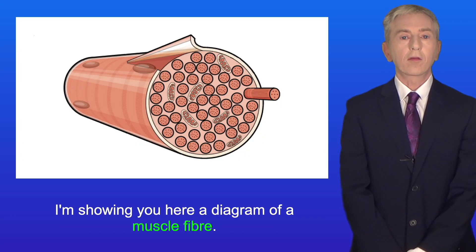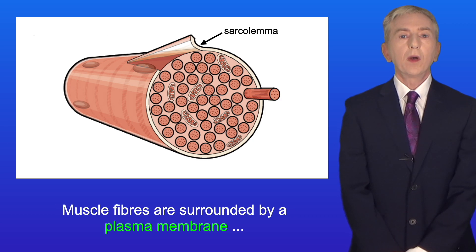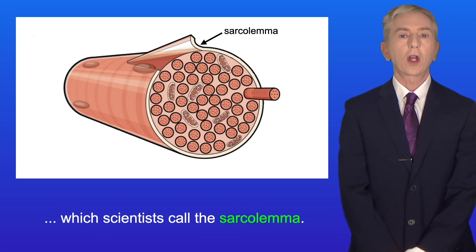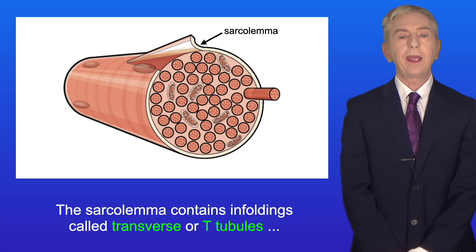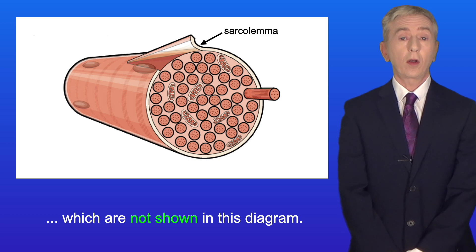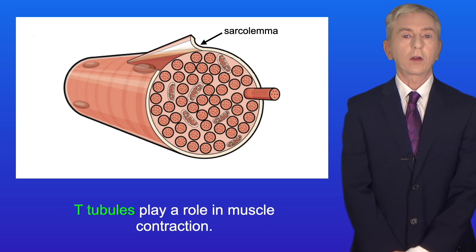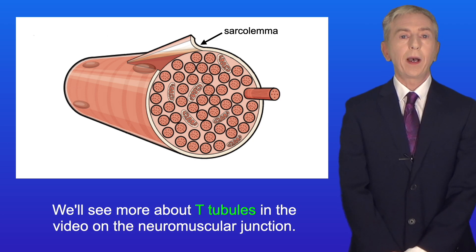I'm showing you here a diagram of a muscle fiber. Muscle fibers are surrounded by a plasma membrane which scientists call the sarcolemma. The sarcolemma contains infoldings called transverse or T-tubules which are not shown in this diagram. T-tubules play a role in muscle contraction and we'll see more about T-tubules in the video on the neuromuscular junction.